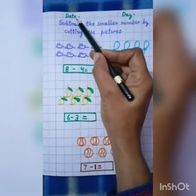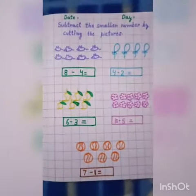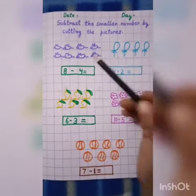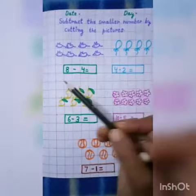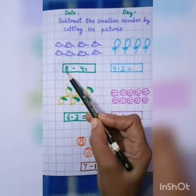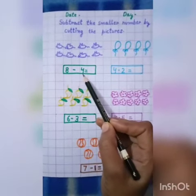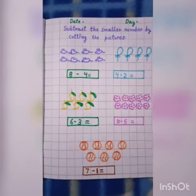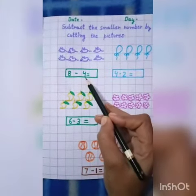First of all, you have to write down date and day on the top. Let's do the questions. Look at the first question. Here we have two numbers. Number one is eight and the second number is four. Now, tell your ma'am which one is smaller? Yes. Smaller number is four.